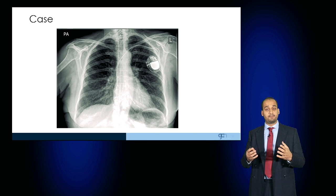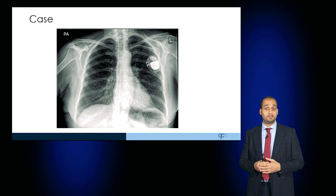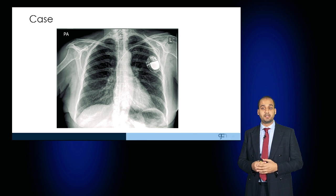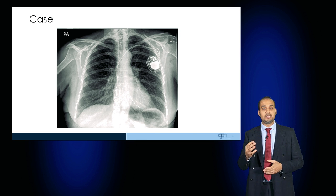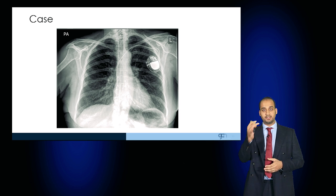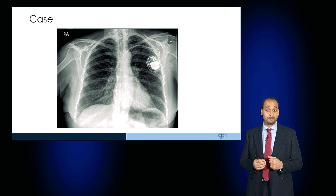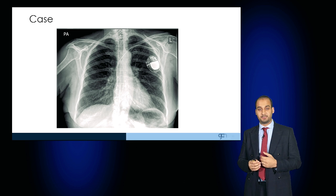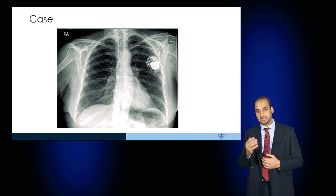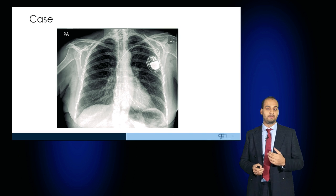This is a foreign body noted on the chest radiograph — you can see a dual chamber pacemaker, and you can see the two chambers being innervated by this pacemaker that's sited in the left subclavicular fossa.